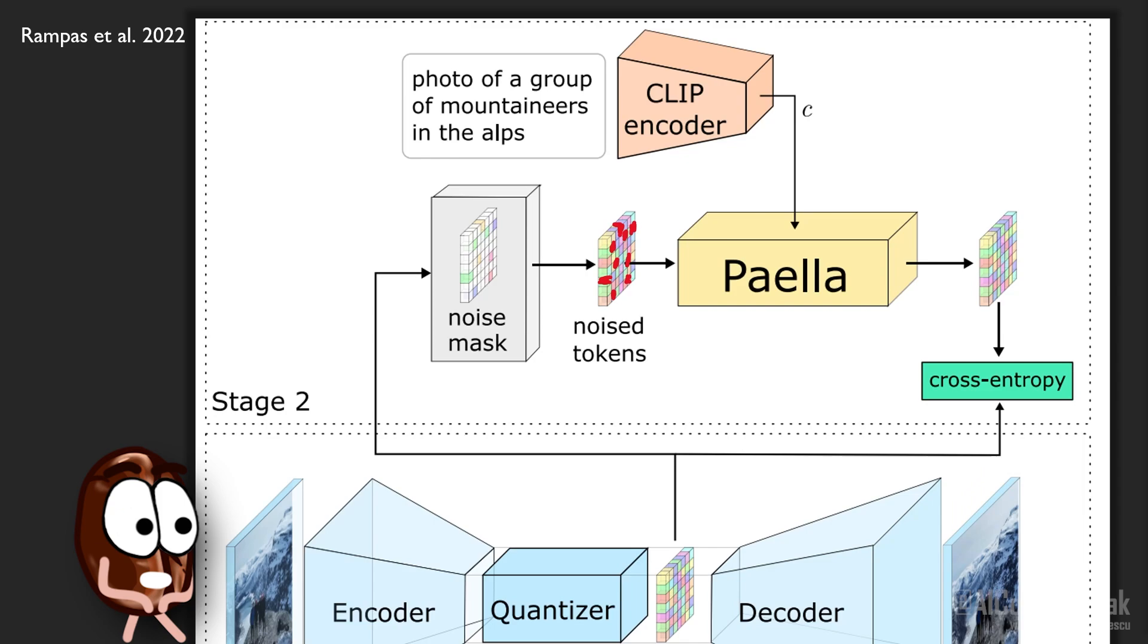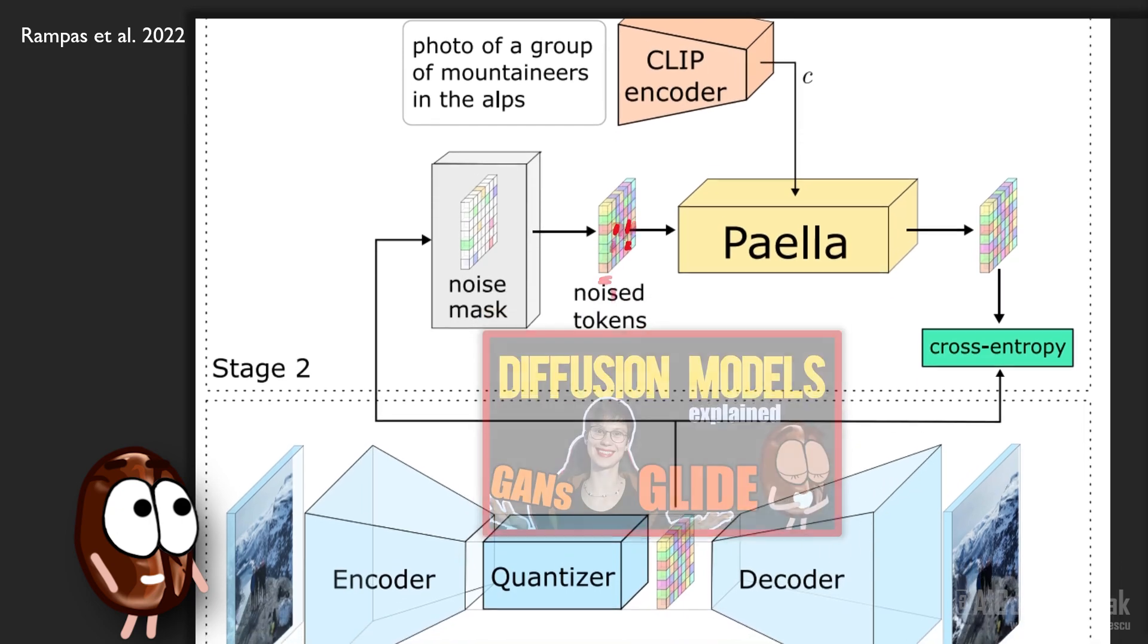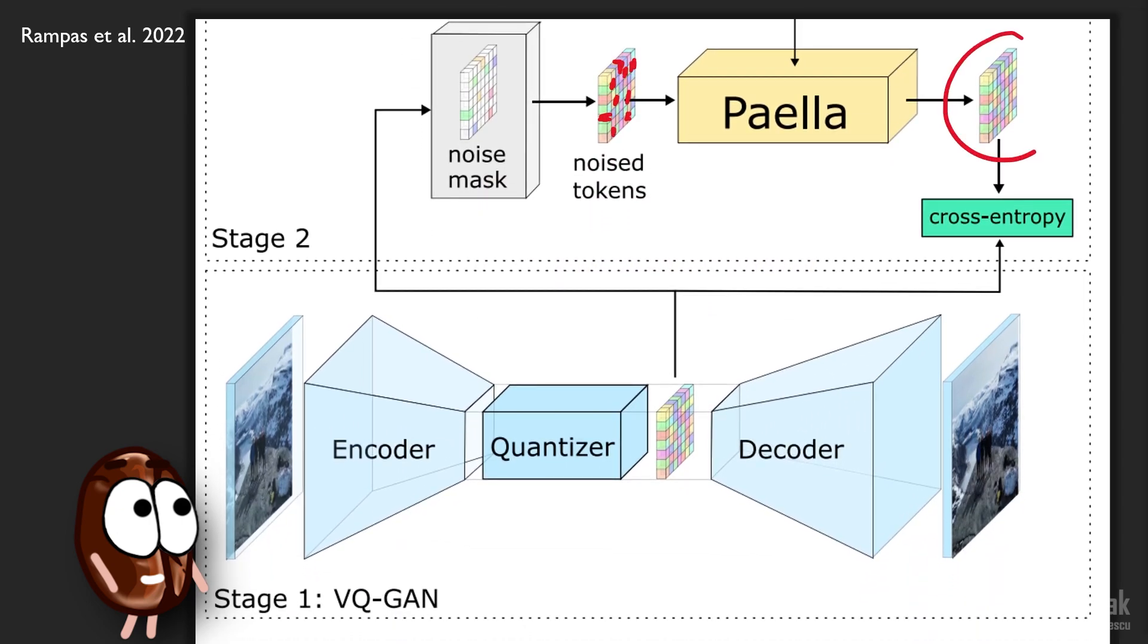To stick to the text information better, it also uses classifier-free guidance. If you want to know what classifier-free guidance is, check out our previous video. The reconstructed latent space representation can run through the decoder, and so at the decoder output we have an image conditioned on text.